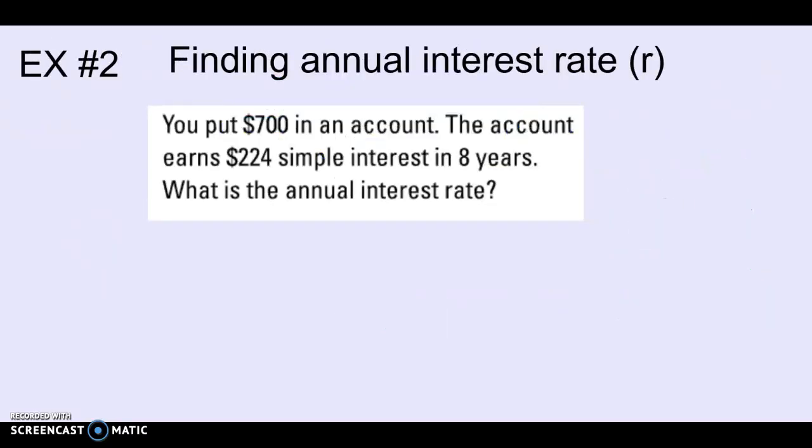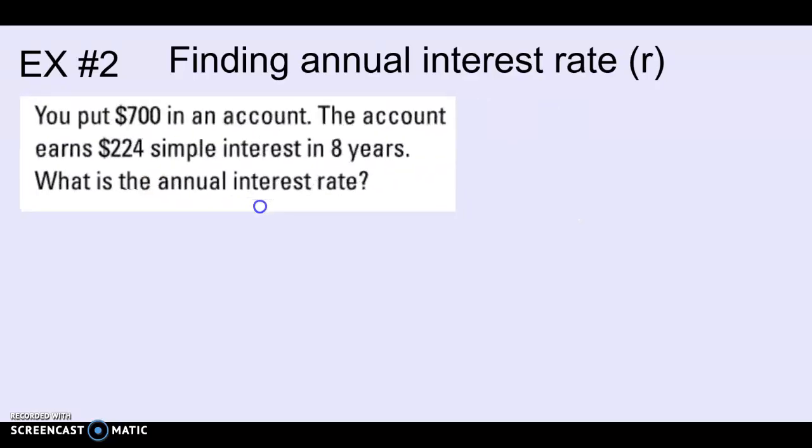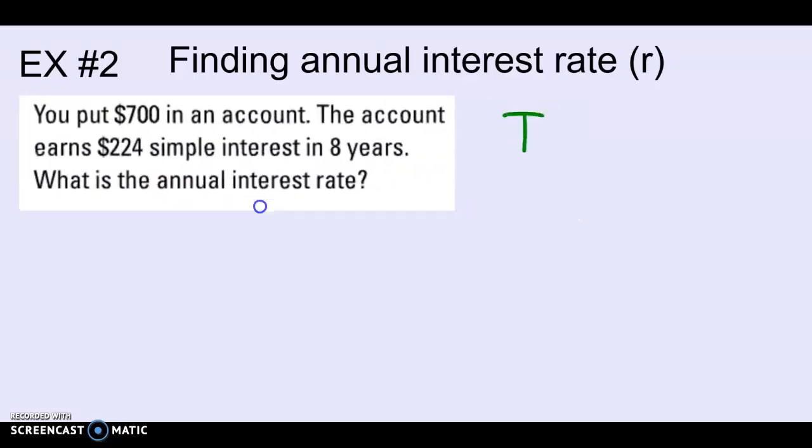Now finding the rate. I'm going to move this out of the way. I'm going to start with my formula. So you put $700 in an account, the account earns $224 in simple interest in eight years. Find the rate. So again, I'm just going to figure out what I know. Looks like I start with $700. That's my principal. The amount of interest comes out to $224. And it's been there for eight years. That's my time.